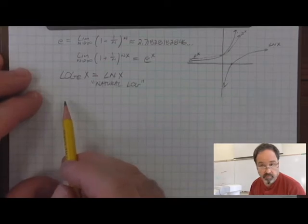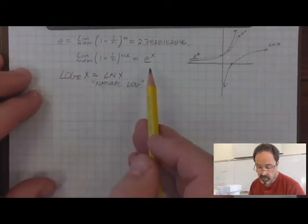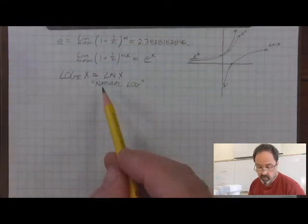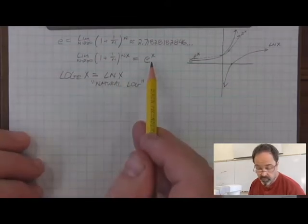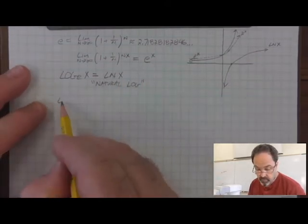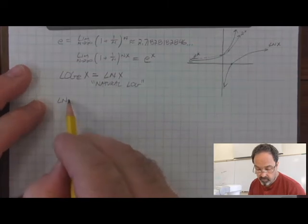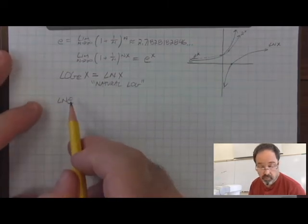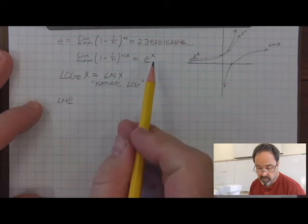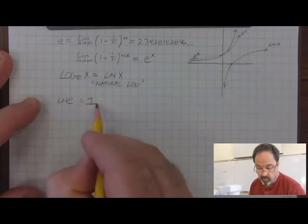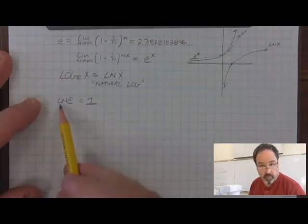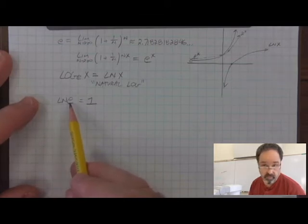All of the properties of logarithms and exponents are useful in dealing with equations with natural log base. The one that captures the inverse nature of log base e and power base e is the simple property that the natural log of e is equal to 1. Natural log is the inverse of power base e. They cancel each other out.